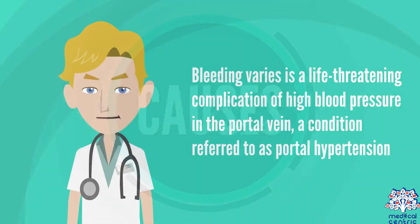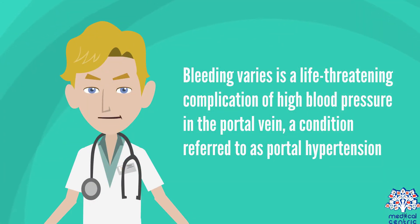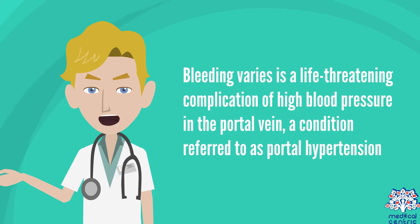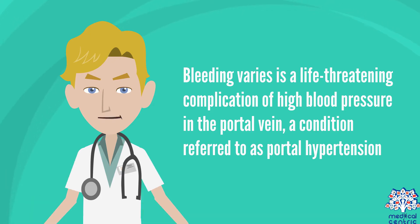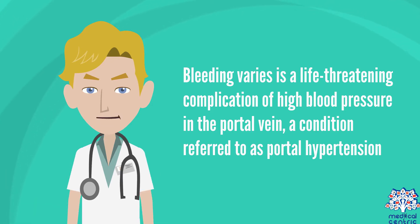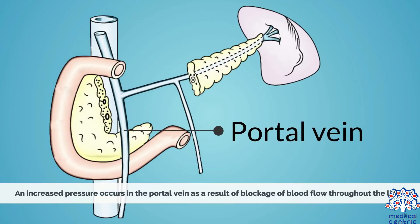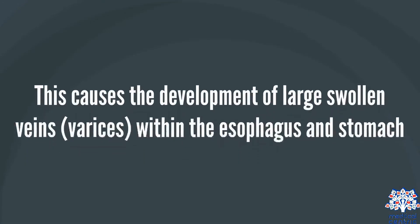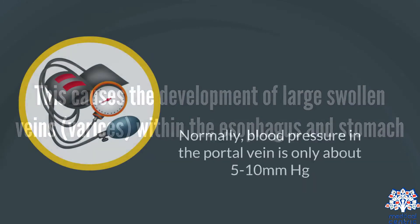Bleeding varices is a life-threatening complication of high blood pressure in the portal vein, a condition referred to as portal hypertension. An increased pressure occurs in the portal vein as a result of blockage of blood flow throughout the liver. This causes the development of large, swollen veins, or varices, within the esophagus and stomach.